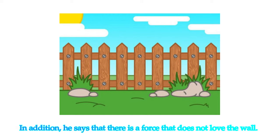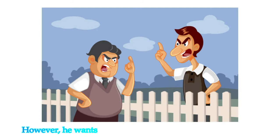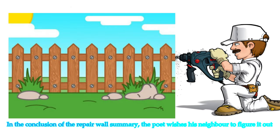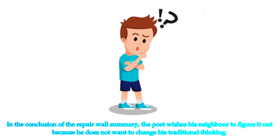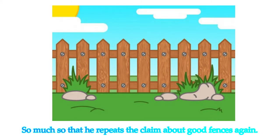The poet says that there is a force that does not love the wall — that is, he wants to tear it down. The poet suggests that the elves could make gaps in the wall. However, he wants the neighbor to understand for himself. In conclusion, the poet wishes his neighbor to figure it out because he does not want to change his traditional thinking, so much so that he repeats the claim about good fences again.